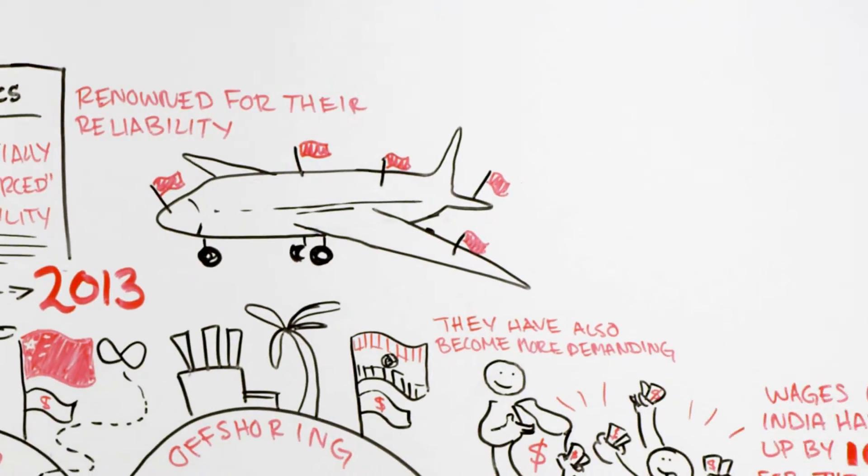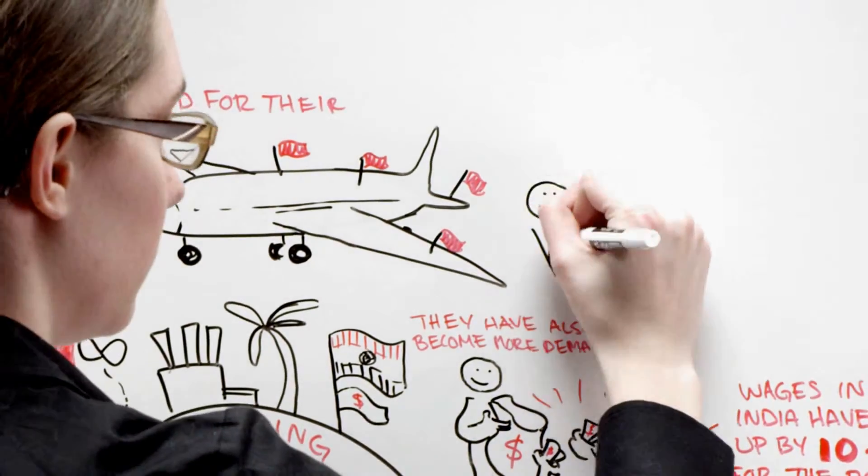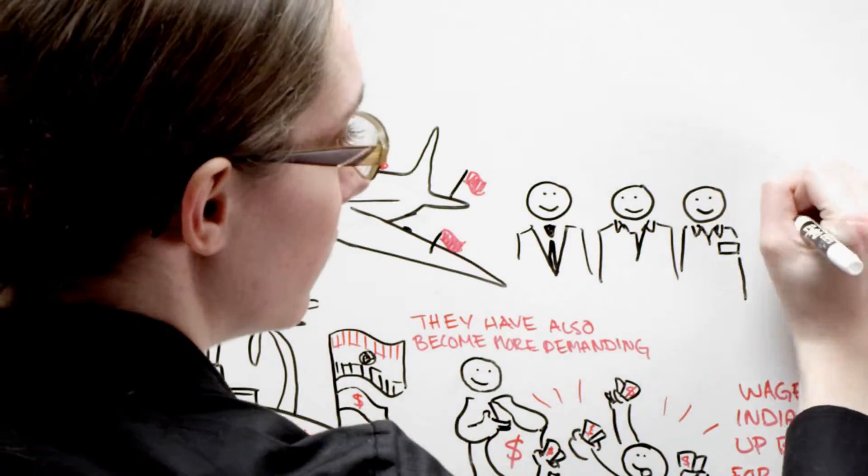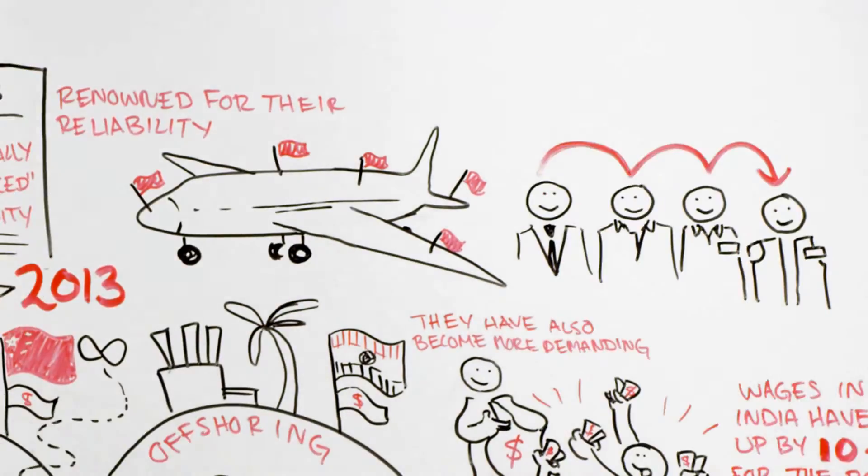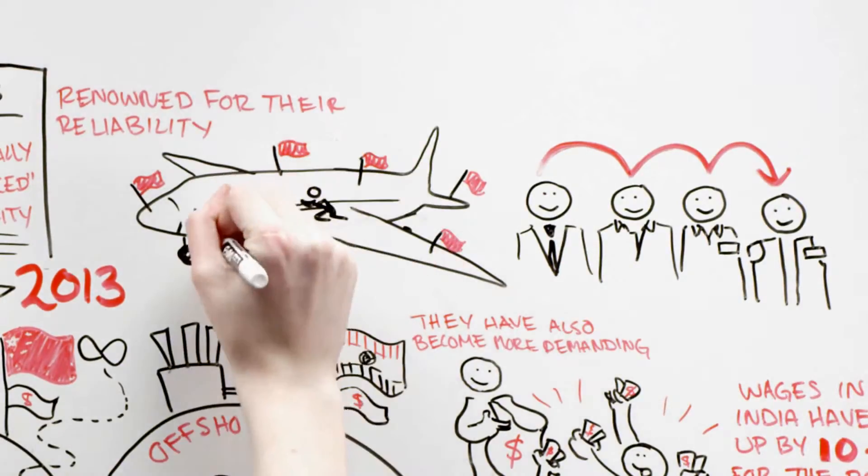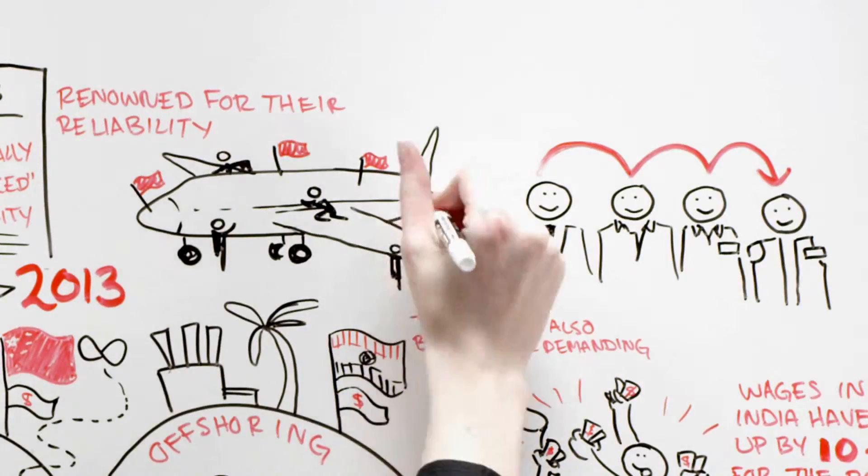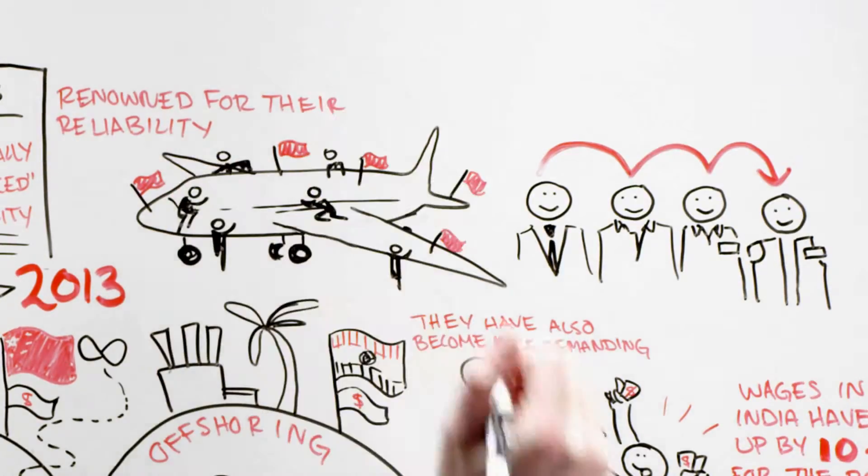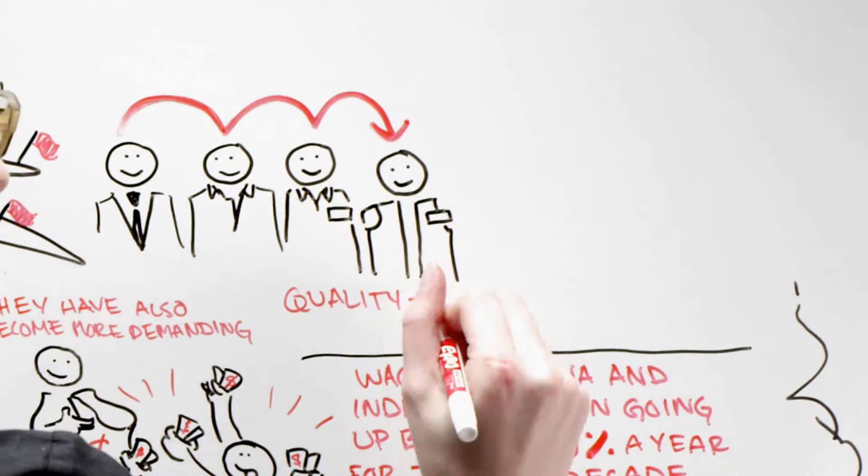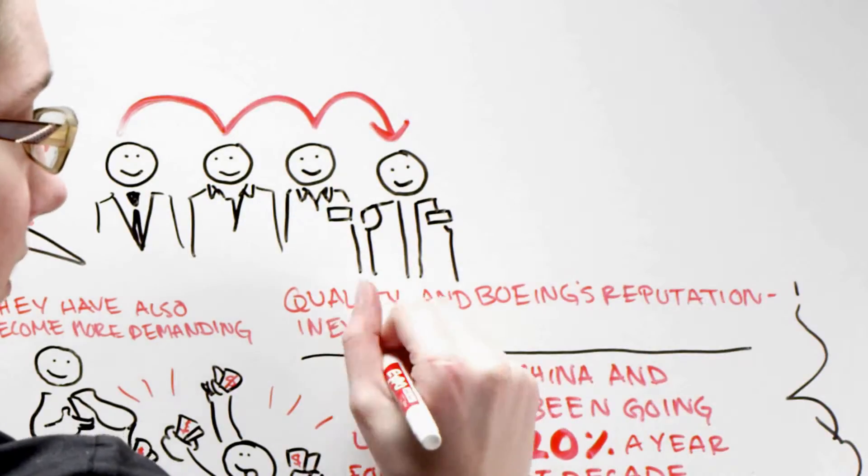But according to the Times, the company gave too much autonomy to their major suppliers and surrendered oversight of subcontractors to the contractors themselves. The result is that there were too many players working on too many pieces with no centralized system of quality control. Quality and Boeing's reputation inevitably suffered.